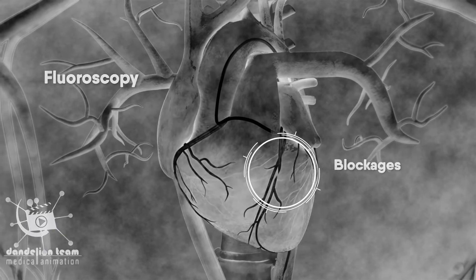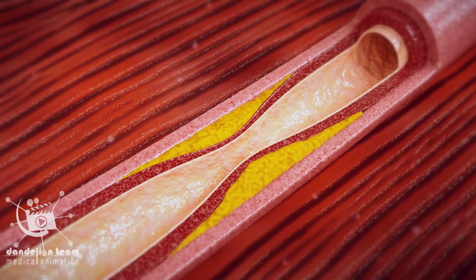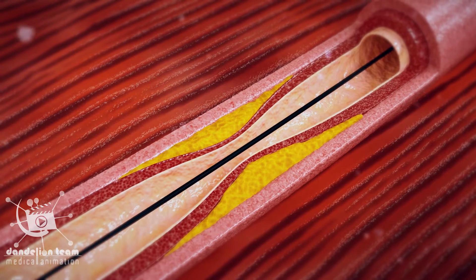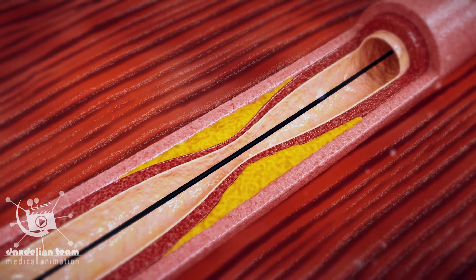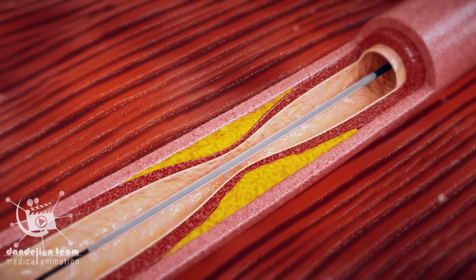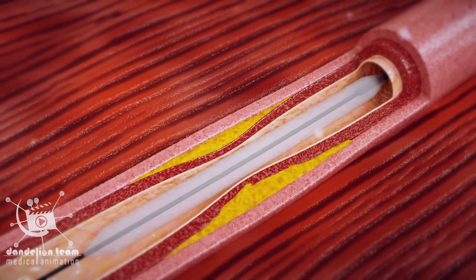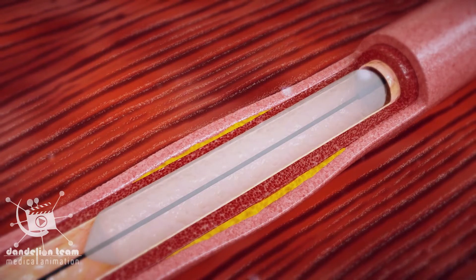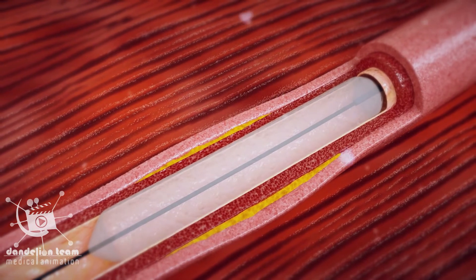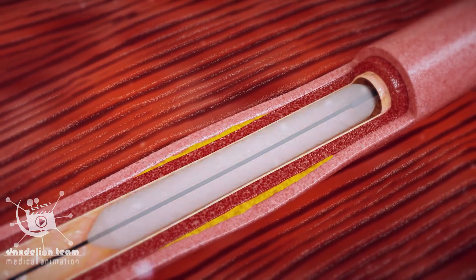If significant blockages are found, the doctor will insert the guide wire, delivering a small balloon to the affected section of the artery. This is then inflated to widen the artery, squashing fatty deposits against the artery wall.